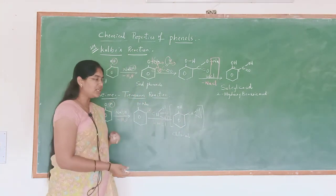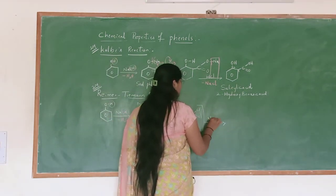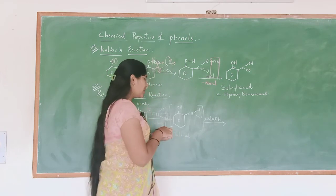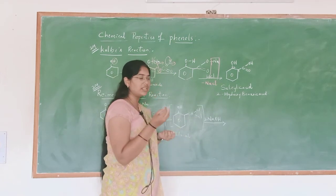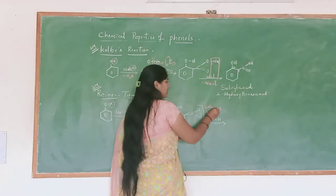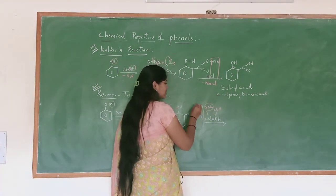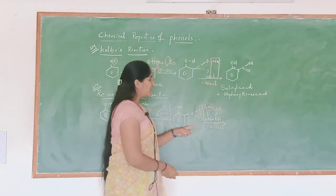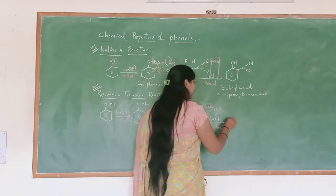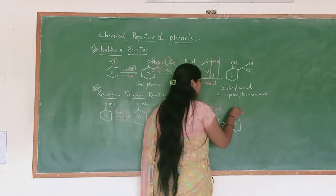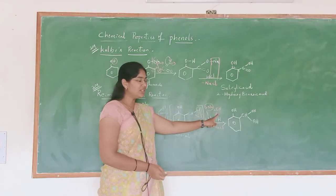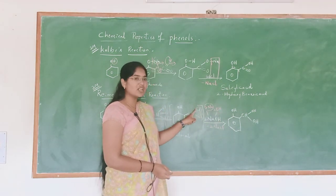This intermediate is highly reactive and immediately participates in reaction with two moles of NaOH. We know two moles of NaOH contain two sodium ions and two OH ions. These two sodiums react with the two chlorines of CHCl2, eliminating two NaCl. Whatever two hydroxy groups are present substitute at the positions of the two chlorine atoms.